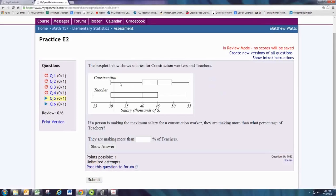Looking at the construction workers, the maximum is the right whisker on the box and whisker plot, which corresponds to 55. Notice that is to the right or greater than the maximum for teachers.